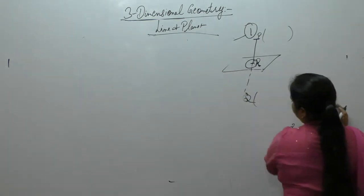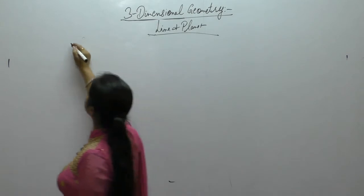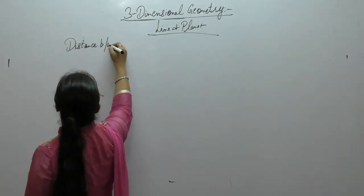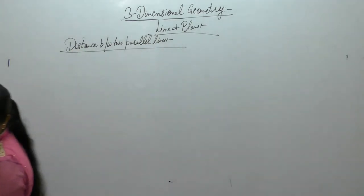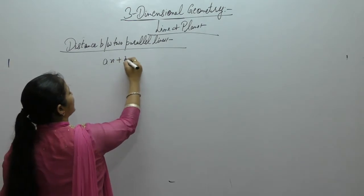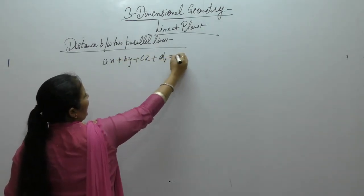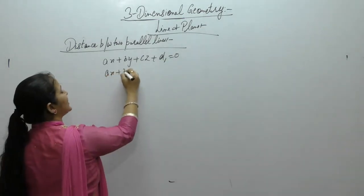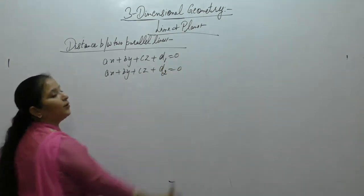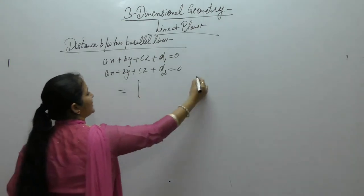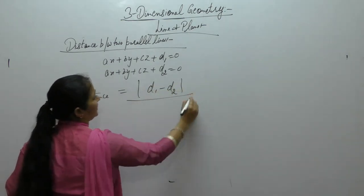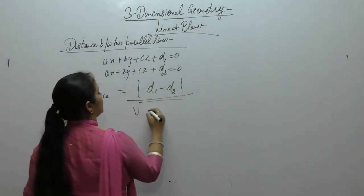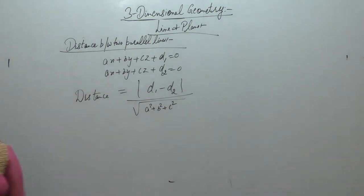Now, next is distance between two parallel lines. Distance between two parallel lines. Suppose we have two lines: AX plus BY plus CZ plus D1 equals 0. Parallel lines, only the constant term will be different. AX plus BY plus CZ plus D2 is equal to 0. Now, we want to find the distance between these two parallel lines. That is equal to D1 minus D2 upon square root of A square plus B square plus C square.